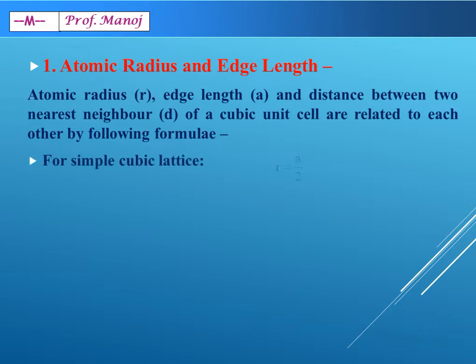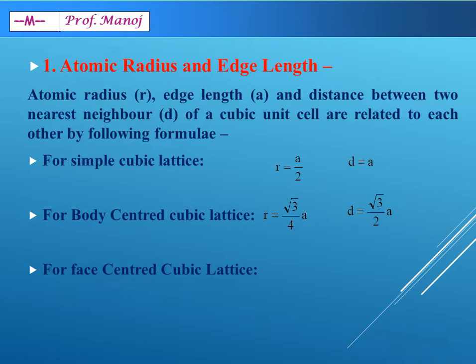For simple cubic lattice, atomic radius is equal to edge length upon 2. Distance between nearest neighbor is equal to edge length itself. For body-centered cubic lattice, r is equal to root 3 upon 4 into edge length. Distance between nearest neighbor is root 3 upon 2 multiplied by a. For face-centered cubic lattice, radius is equal to 1 upon 2 root 2 into edge length. Distance between nearest neighbor is 1 upon root 2 multiplied by a.